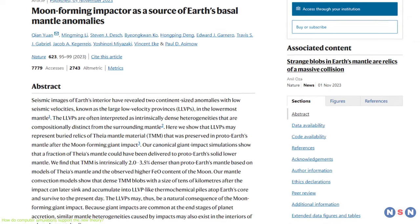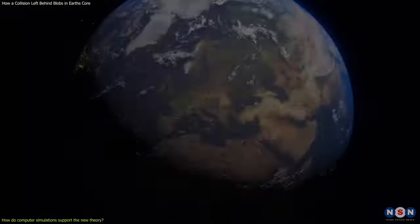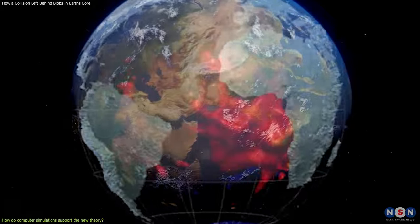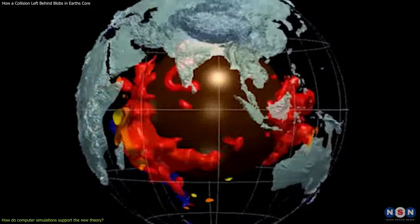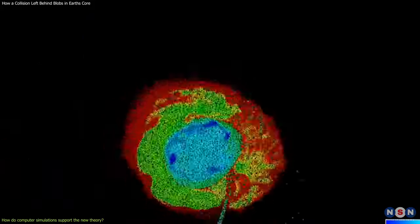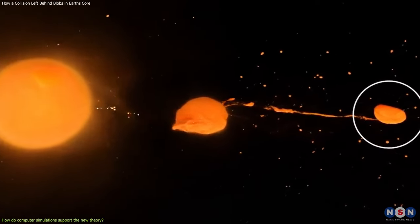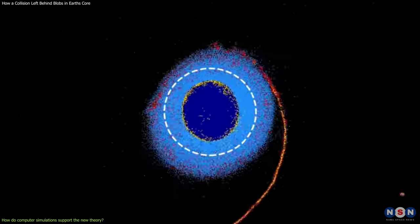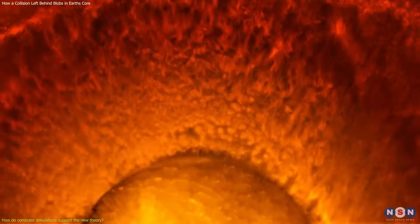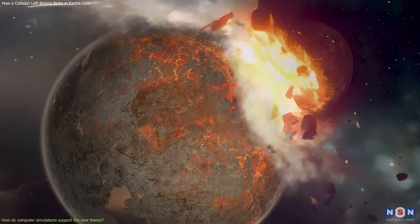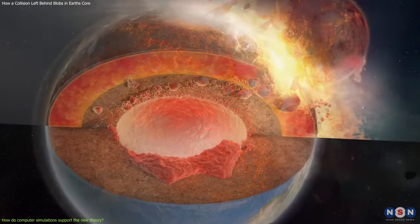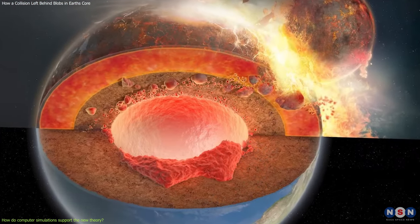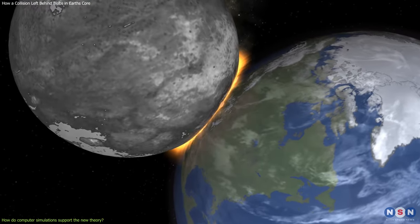The results of their simulations were published in the journal Nature, and they support the new theory that the LLVPs are remnants of Theia. The simulations showed that the collision between Earth and Theia could indeed produce a moon with a different composition and density than the Earth, and that some of Theia's material could fall back to Earth and sink into the mantle. They also showed that the material that fell back to Earth could match the observed location and shape of the LLVPs, depending on the angle and direction of the impact.